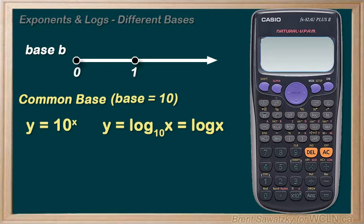The second base of particular interest is called the natural base. The natural base, also called Euler's number, is represented by a small e.